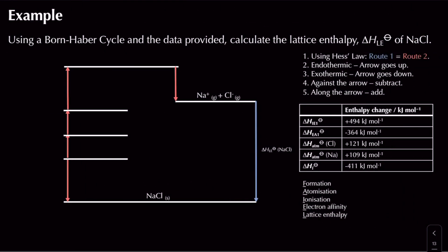Let's look at an example: we're asked to use a Born-Haber cycle and the data provided to calculate a value for the lattice enthalpy of sodium chloride. When you see these types of questions it's important to know what ions you're forming, because that tells you how many lots of each type of enthalpy you'll need. In the Born-Haber cycle shown, the lattice enthalpy arrow represents the enthalpy change when you go from sodium plus ions (gas) and chloride ions (gas) to form solid sodium chloride.